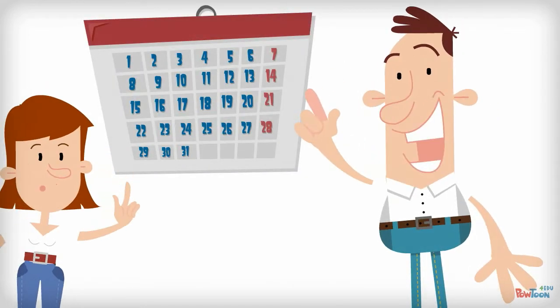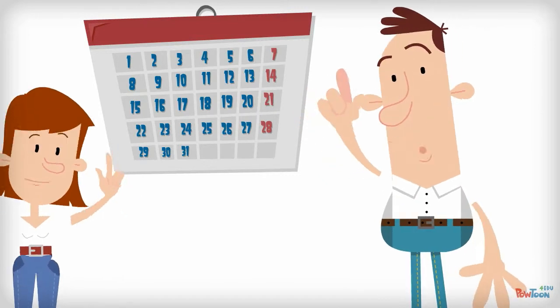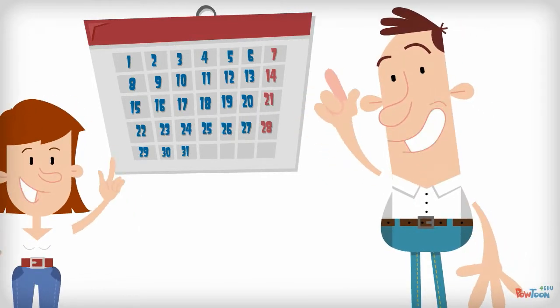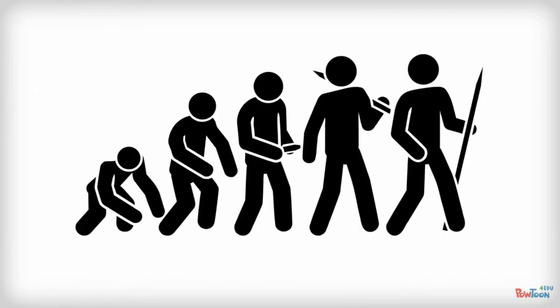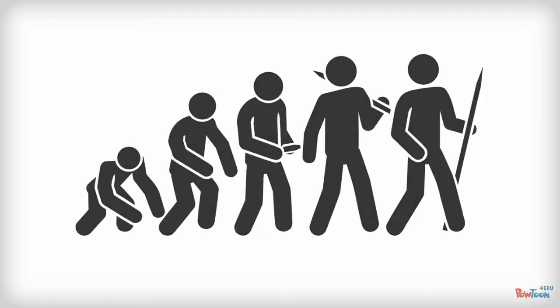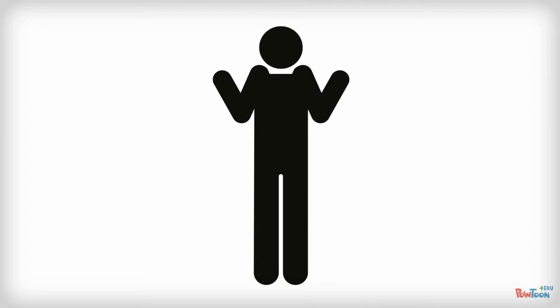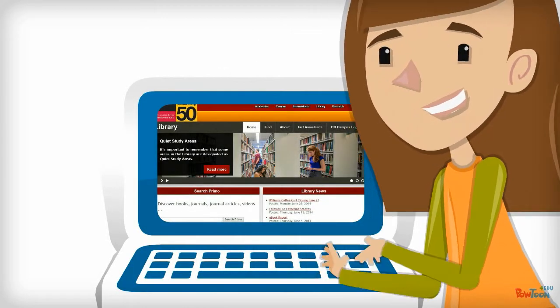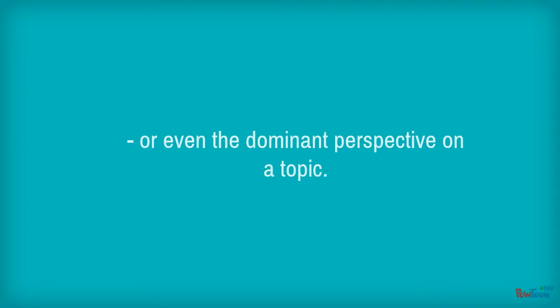Because scholarly communication is a conversation where ideas can be debated over long periods of time, it's important to know that conversations can evolve. They have a history and we don't know where they will end. When researching, it's important to know that a source might not represent the only, or even the dominant perspective on a topic.